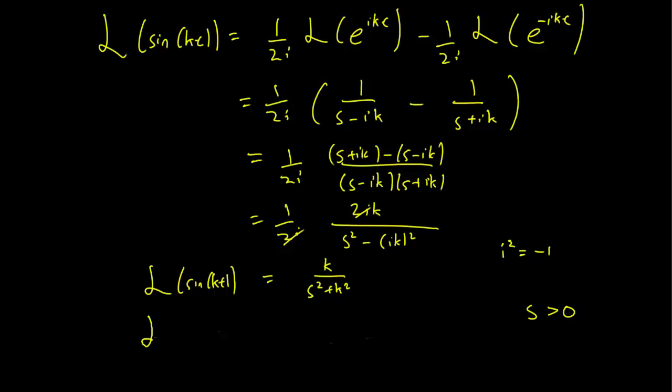And similarly, we have the Laplace transform of the cosine function being s over s squared plus k squared. The book calculates that, so we're not going to.